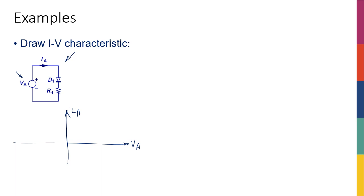So if the voltage source is changing, what would be the current of the diode? Just to remind you, this is the model we are using for a diode — the fixed voltage model. We have some Vd_on, sometimes called the threshold voltage Vth. Below that we have zero current, and after that we're going to have a fixed voltage for all different currents.